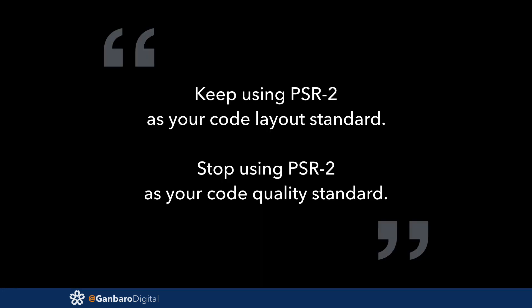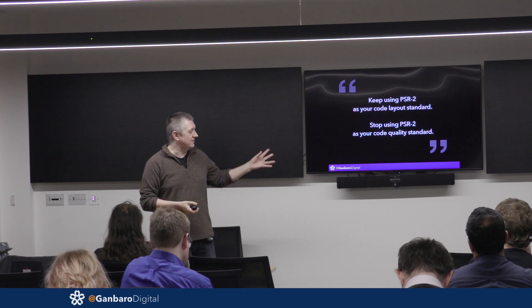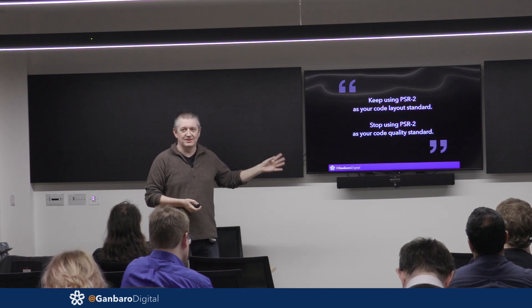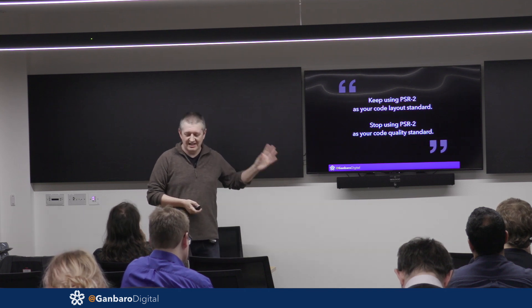It's really hard to make your code do what you want when you think it says something different to what it does. My advice is: if you want a code layout standard, you might as well use PSR2 because it doesn't matter which code layout standard you use — it's still going to have this trap of how the brain works, so you might as well use one everyone else is using. But if you're using it explicitly as a code quality standard, I would urge you not to, because it doesn't do anything about quality.